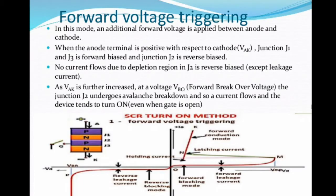Forward voltage triggering occurs when the anode-cathode forward voltage is increased with the gate circuit opened.